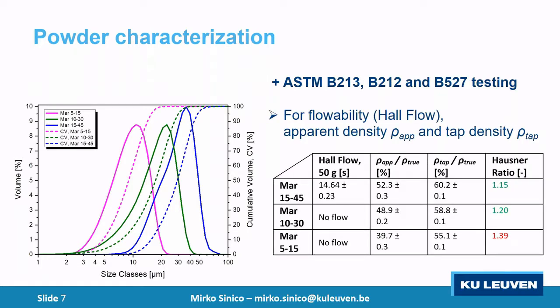We did ASTM testing for outflow and Hausner ratio. Only the standard powder was able to go through the outflow meter, but outflow isn't the best indicator for LPBF usability. It's better to look at the Hausner ratio. The 15–45 and 10–30 powders have more or less the same Hausner ratio, but the 5–15 micron powder goes quite high — above the suggested threshold of 1.25 — indicating serious problems in depositing the powder. Therefore, the 5–15 micron distribution will not be discussed further, as it requires a different recoating system, not the standard recoating blade we're using.